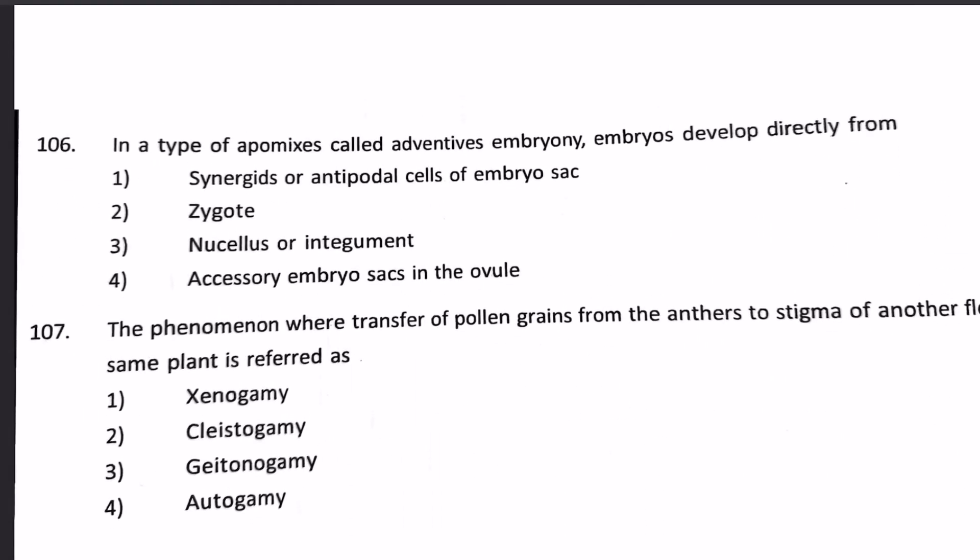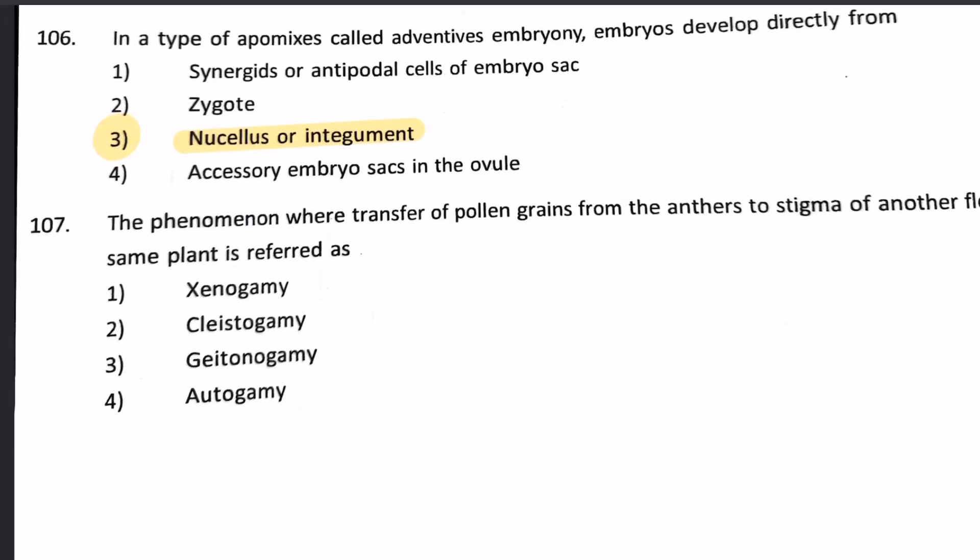In a type of apomixis called adventive embryony, the embryo is developed directly from: 1. Synergids or antipodal cells of the embryo sac, 2. Zygote, 3. Nucellus or integument, 4. Accessory embryo sacs in the ovule. Adventive embryony means an embryo develops without fertilization, not from any functional gamete — it is formed from the nucellus or integument. So our answer will be number 3.